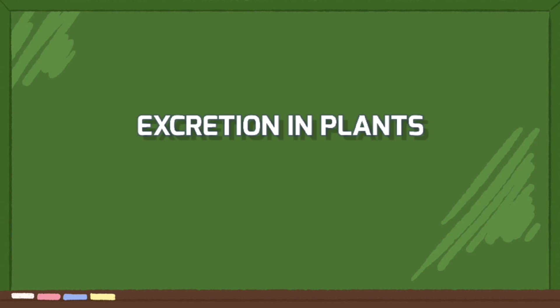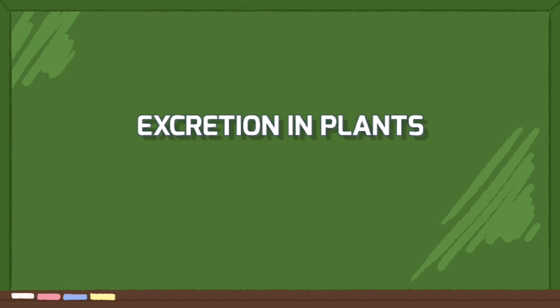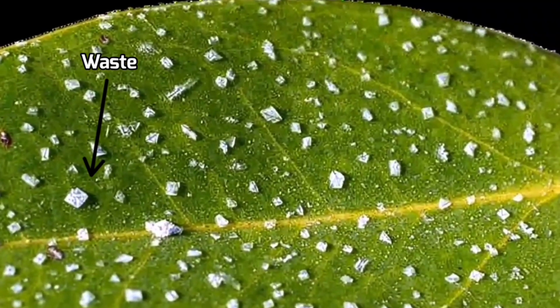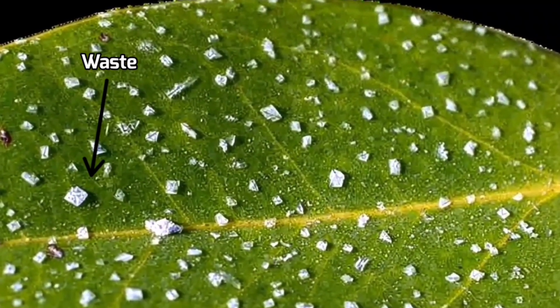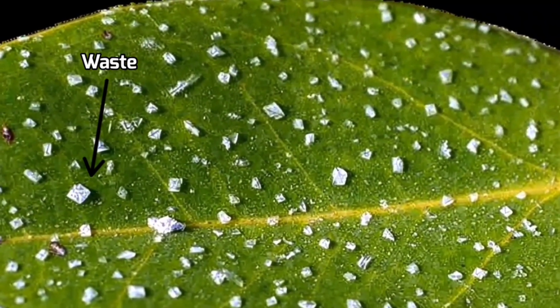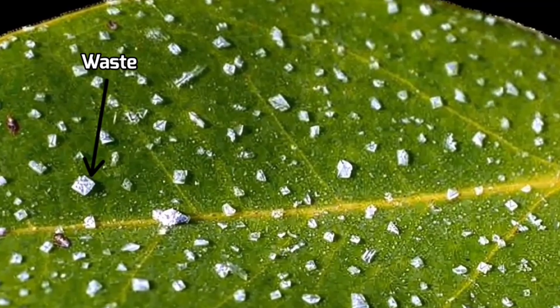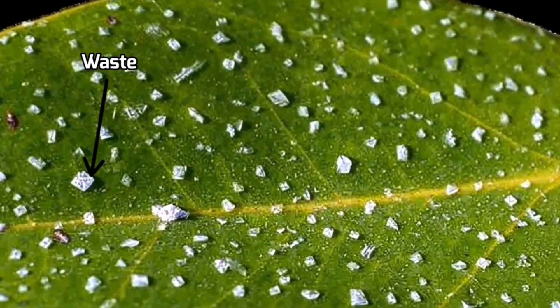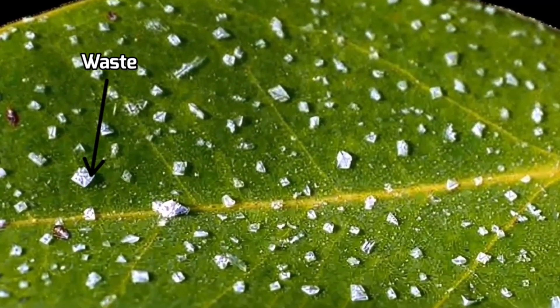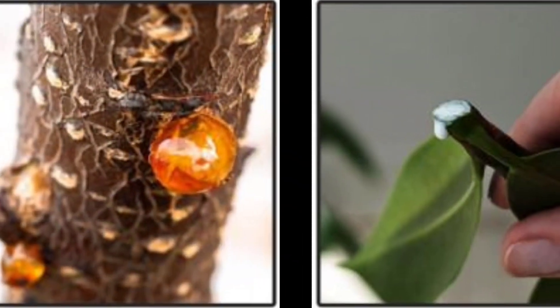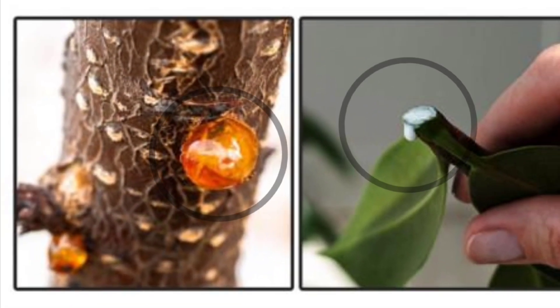Lastly, let's look at excretion. Plants don't have a specialized excretory system. They release waste products through leaves or store them in vacuoles, and some waste is accumulated in non-photosynthetic parts of the plant.